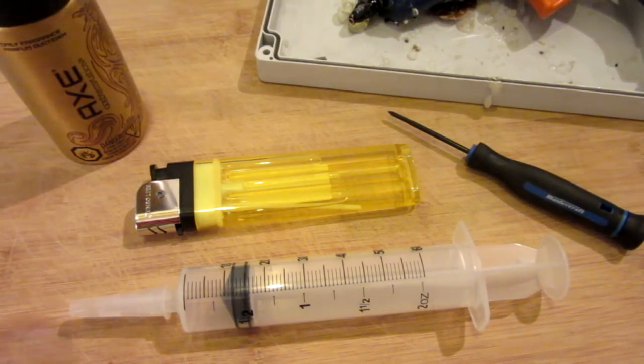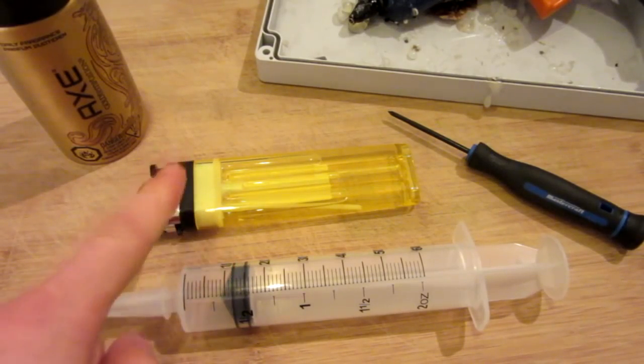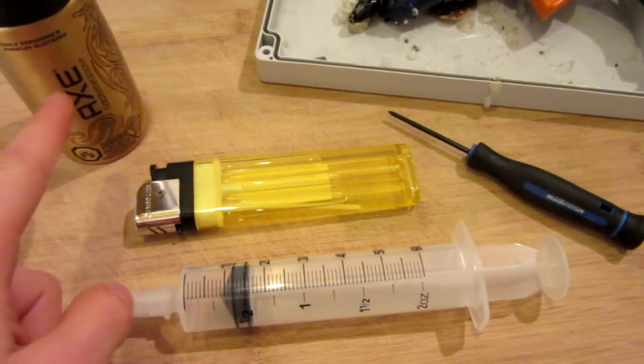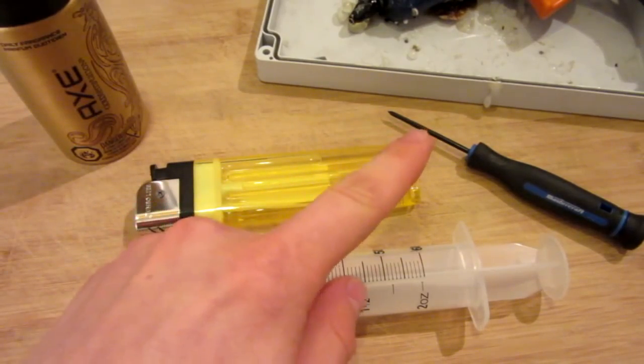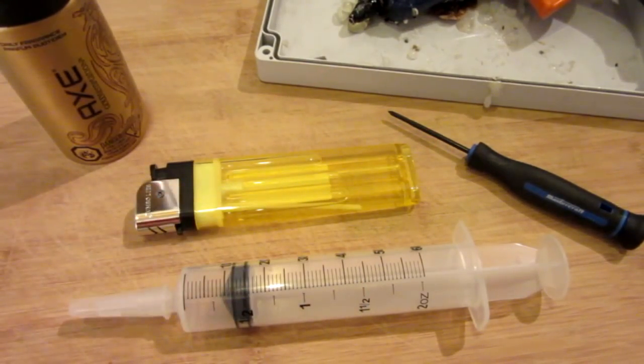All you're going to need for this project is a large syringe, a large lighter, your propellant—of course I'm using Axe—some tools for the lighter, and a hot glue gun.